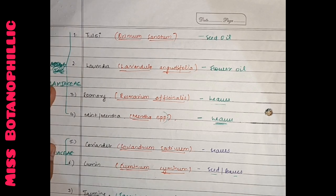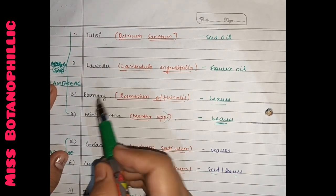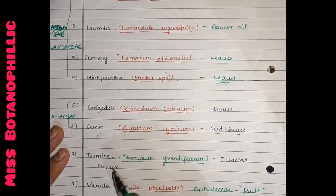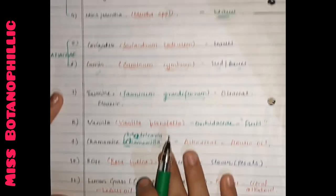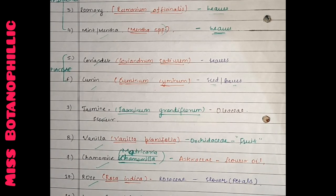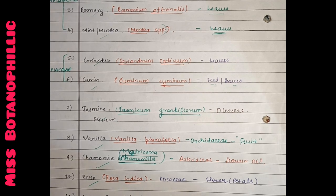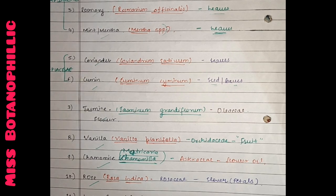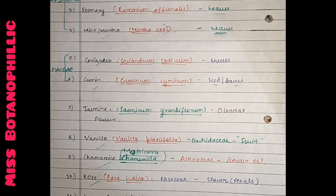Which aromatic plants have we covered today? Tulsi, lavender, rosemary, mint and mentha, coriander, cumin, jasmine flower, vanilla, chamomile, rose and lemongrass. I hope that this video will be helpful for you. I tried to remember it in a simple manner. You should know 10 examples of everything. I have told you to remember it in a tabular form.